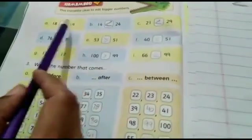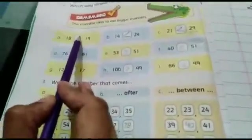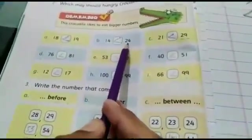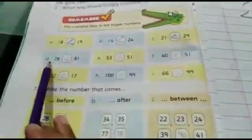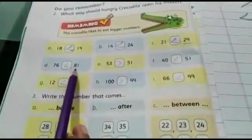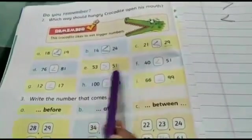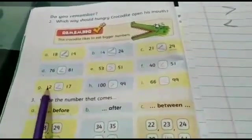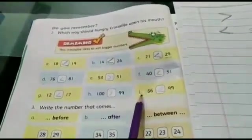Question 2 part A: 18 dash 19, which number is bigger? 19 is bigger, so the mouth opens toward 19. Part B: 14 is less than 24. 21 is less than 29. D: 76 is less than 81. E: 53 is greater than 51. F: 40 is less than 51. G: 12 less than 17. H: 100 is greater than 99. I: 66 less than 99.